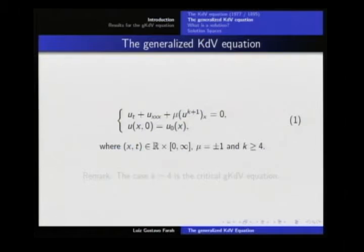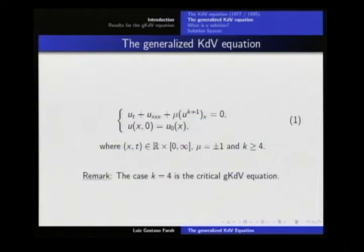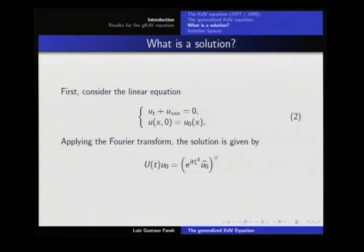My first remark is that the case K equal 4 is the critical gKdV equation — I will explain why K equal 4 is the critical one. Every time I mention a result, I will try to compare with the available results for the critical K. What we are trying to do is generalize the results for the critical K to the bigger K.